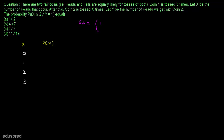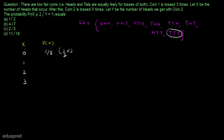The sample space is: HHH, HHT, HTH, THH, TTH, THT, HTT, and TTT. Now looking at this sample space, we can find the probability that X is equal to 0. X equals 0 if we get TTT, and the probability of this is 1/8, since it is 1/2 × 1/2 × 1/2.